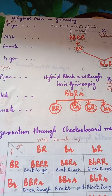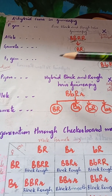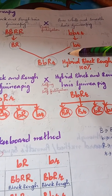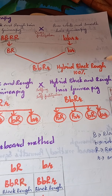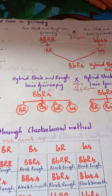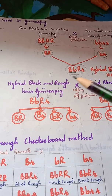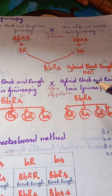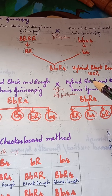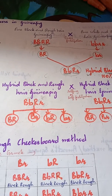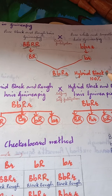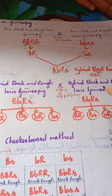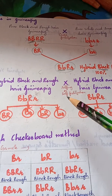In a dihybrid cross in guinea pigs, the offsprings produced in the F1 generation are 100% hybrid — all are black and rough here. In the second case, these black hybrid rough guinea pigs are allowed to fertilize with a similar variety. Both parents are hybrid black rough, and this type of cross is known as selfing or self-fertilization.